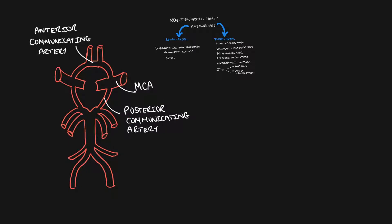Subarachnoid haemorrhages most commonly present with severe acute headache. Less commonly, the patient may present with signs and symptoms of mass effect due to the aneurysm pressing on nearby structures in the brain. For instance, a posterior communicating artery aneurysm may result in a third nerve palsy, and an anterior communicating artery aneurysm may result in a bitemporal field defect.